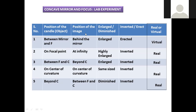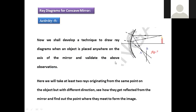Now we move to the ray diagram activity — activity number five. A ray diagram is another kind of activity. A concave mirror is a parabolic surface with interior curvature. The hypothetical line drawn from the center of curvature is called the principal axis.